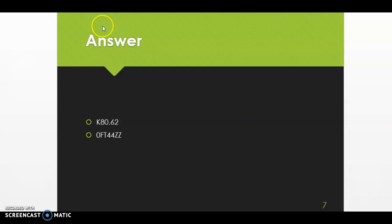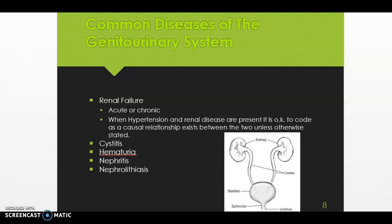Okay, now for the second part of this lecture, let's look at common diseases of the genital urinary system. We have renal failure, which can be acute or chronic. Then we have hypertension. And when we're coding hypertension and renal disease together, remember the coding guidelines tell us to assume that causal relationship.